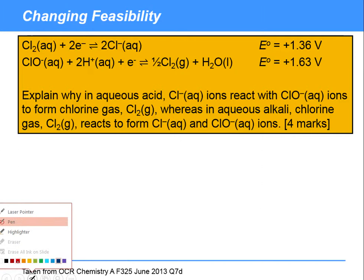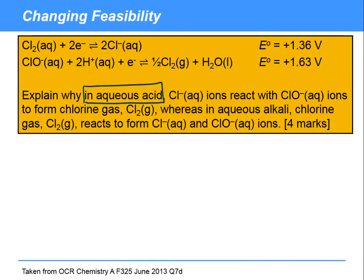So it's a format question. Let's first just analyse what the question is actually saying. So we've got in aqueous acid, Cl⁻ ions are reacting with ClO⁻ ions to form chlorine gas — that's the product of the reaction, Cl₂. So explain why. That's our task. They haven't told us exactly how, but they've given us these standard electrode potential values, so we are to use these to explain that. So it's helpful to think about what type of reaction is happening.